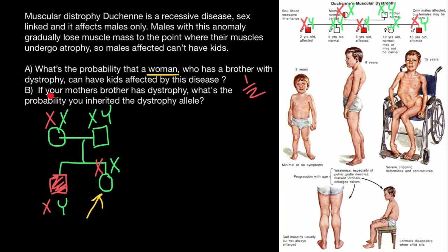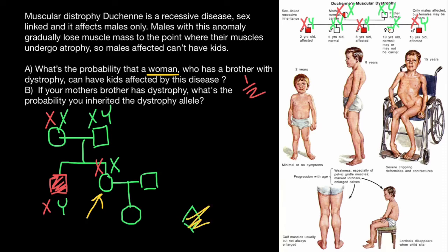Here's the second question: If your mother's brother has dystrophy, what is the probability that you inherit the dystrophy allele? Let's add a couple of people here — another male and this couple have a child, and this is going to be a female child. This new female is going to be our new proband.